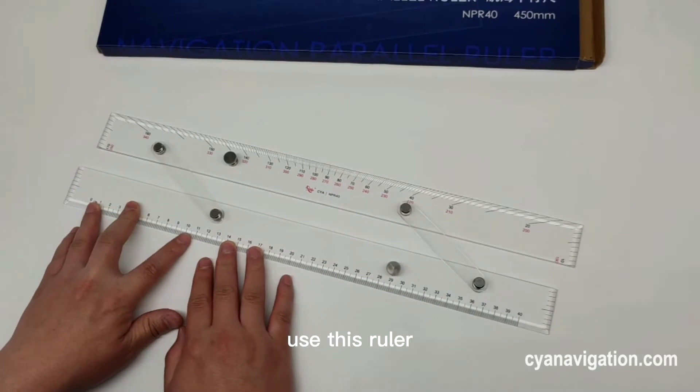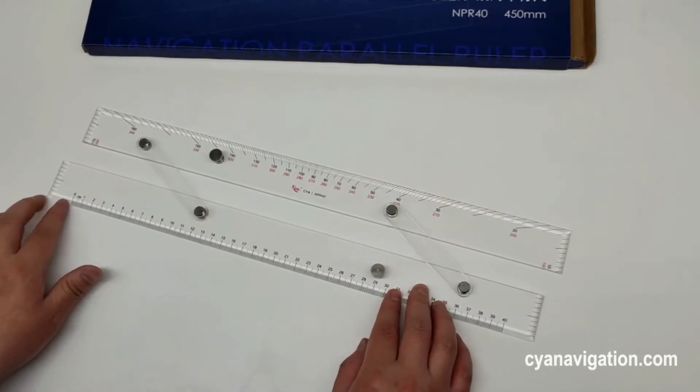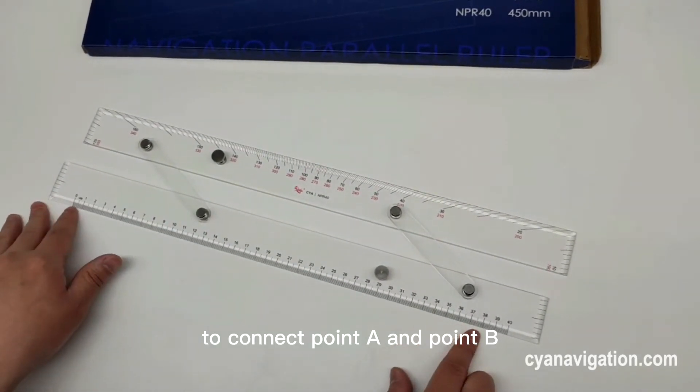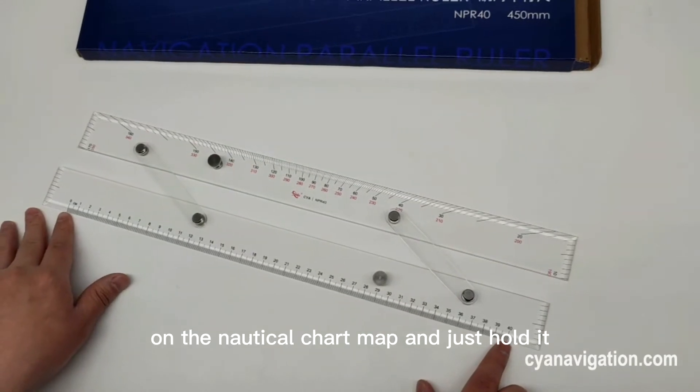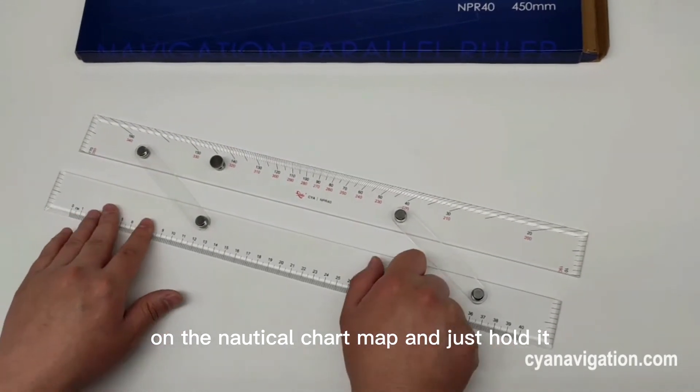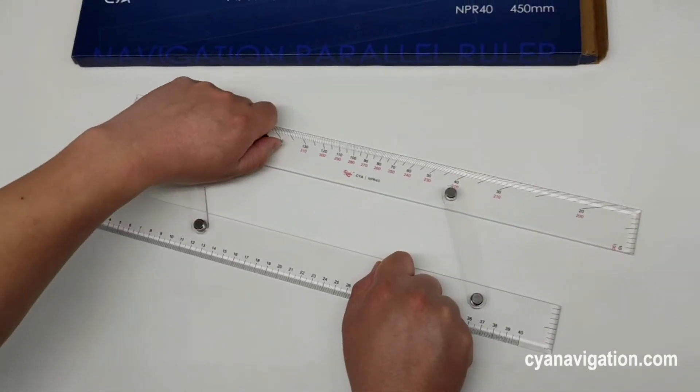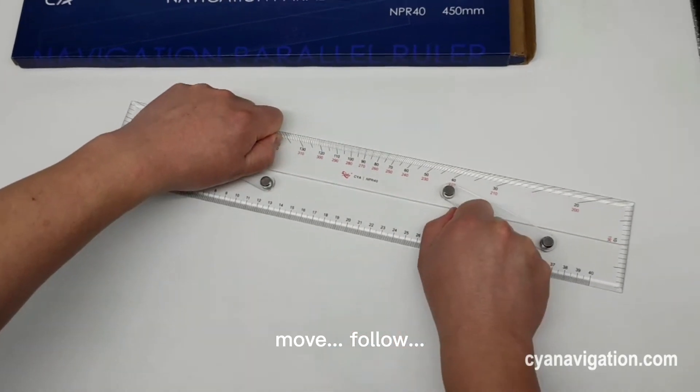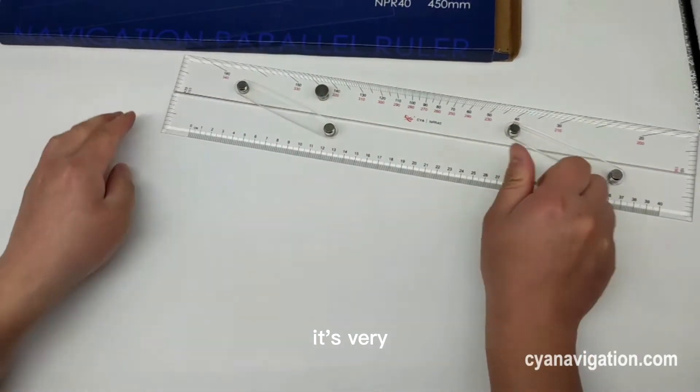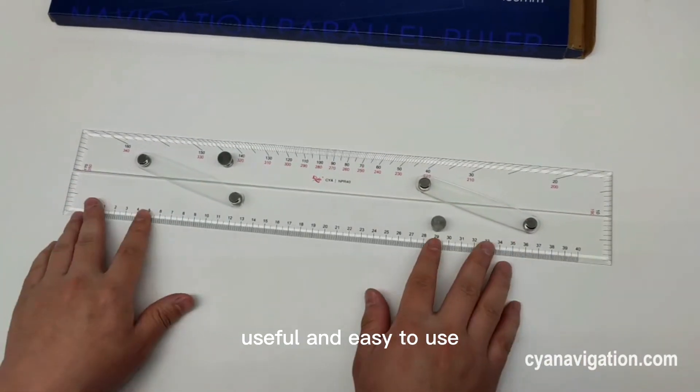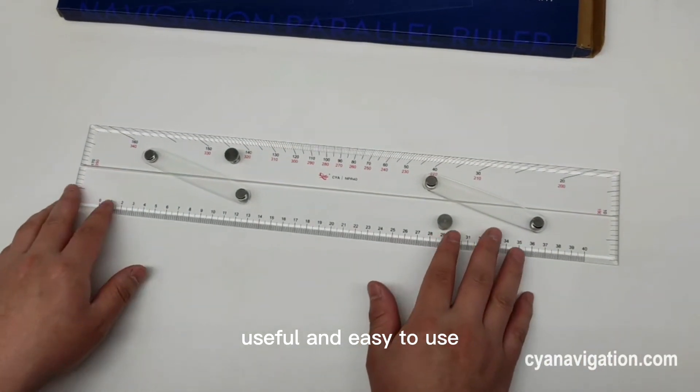When we use this ruler to connect point A and point B on the nautical chart map, just hold it, remove, follow, remove, follow. It's very useful and easy to use.